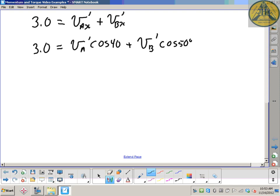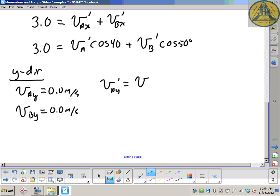3.0 equals VA after the collision cosine 40 plus VB after the collision cosine 50. There's still two variables here in one equation, but when I set up the y direction, I'll have the same two variables. So I'll have two equations and two unknown variables. In the y direction, VAY is 0, VBY is 0. VAY after the collision is its magnitude, which we're looking for, sine 40.